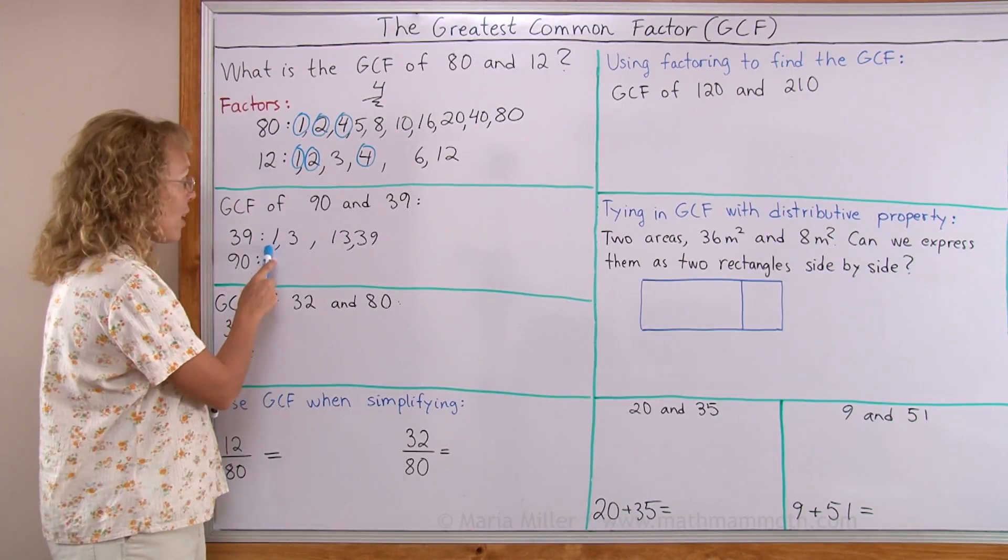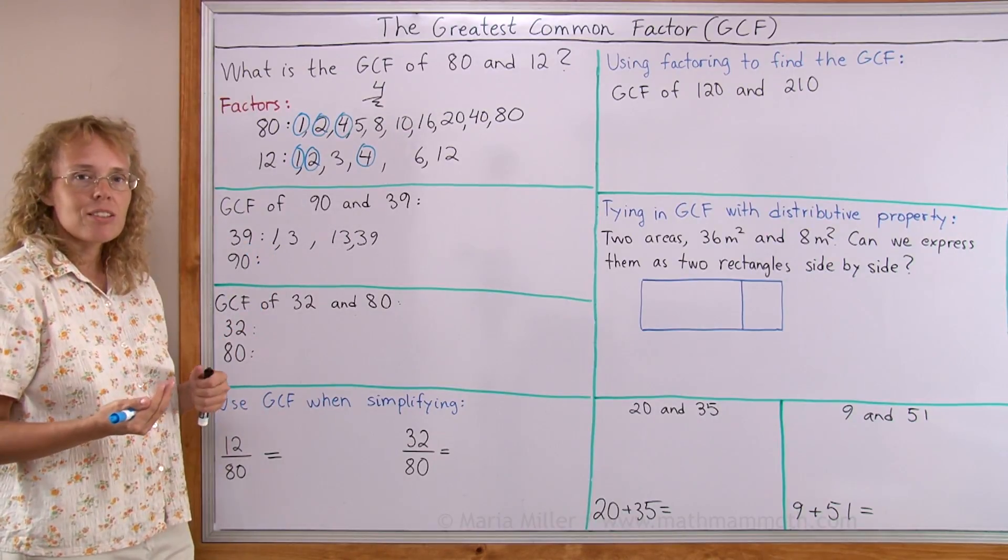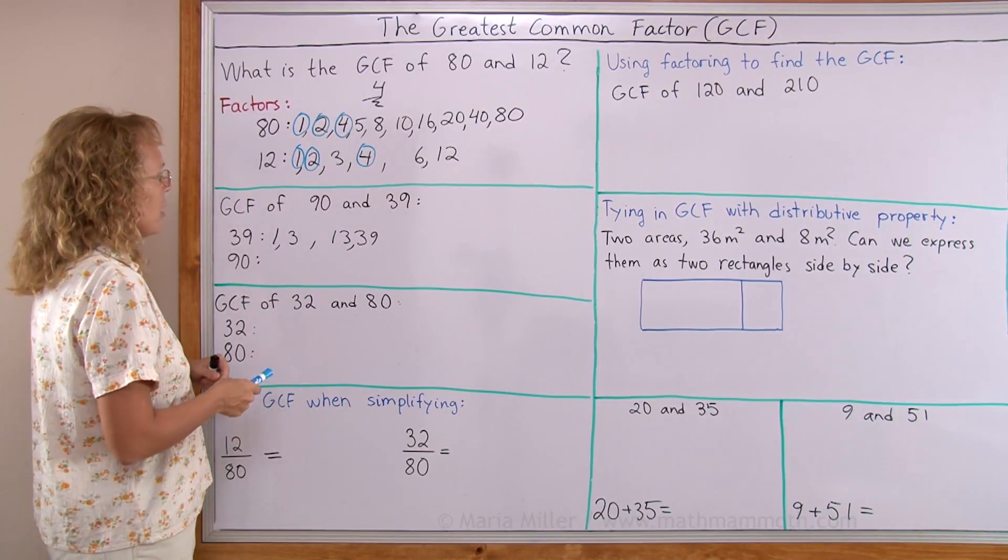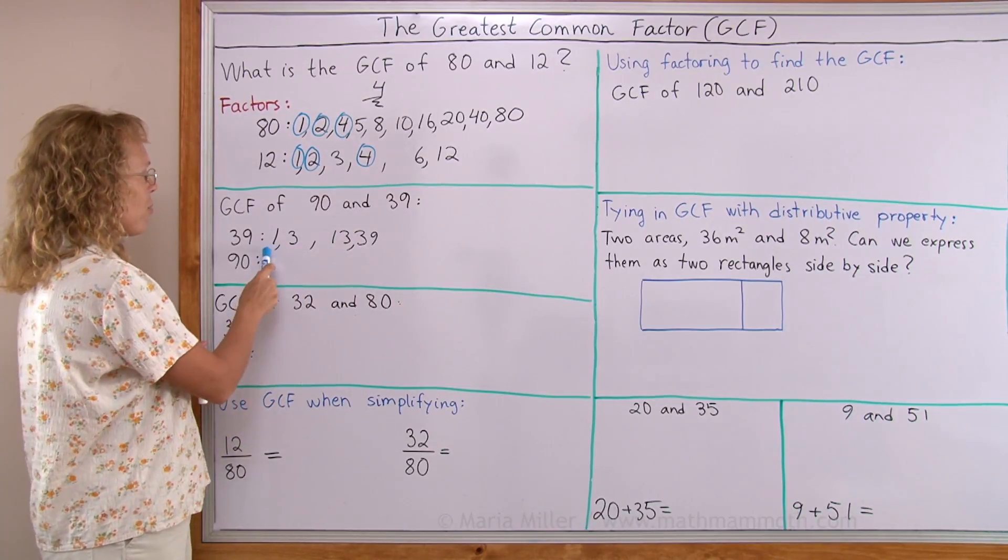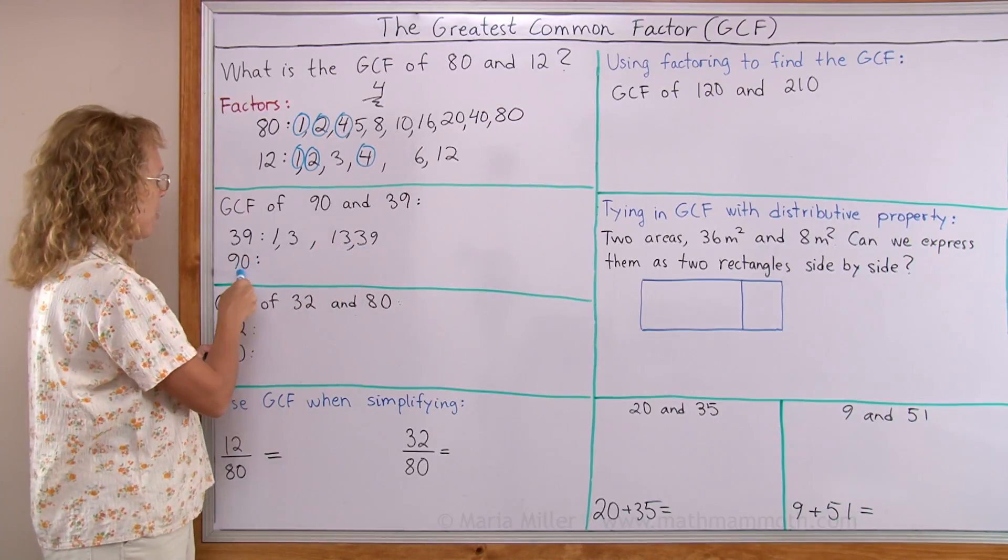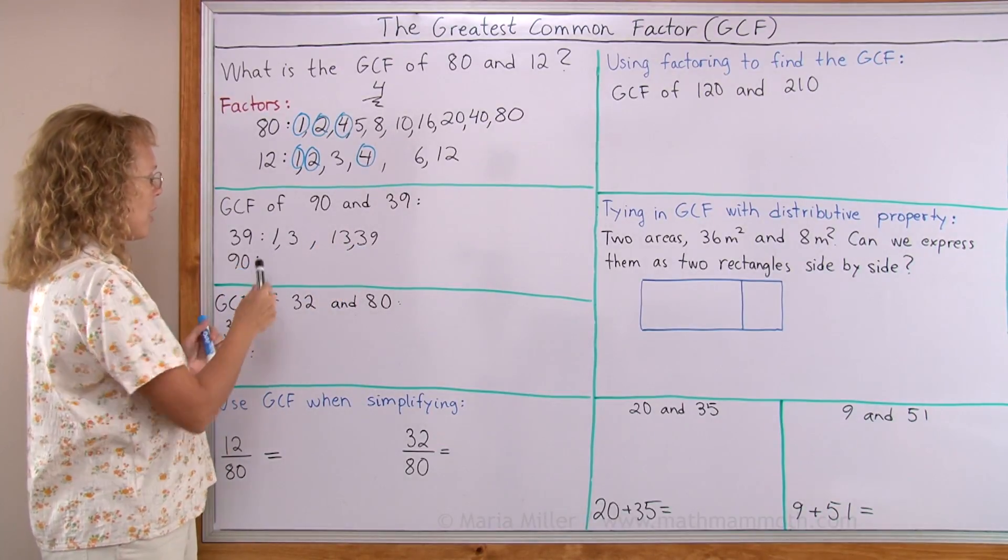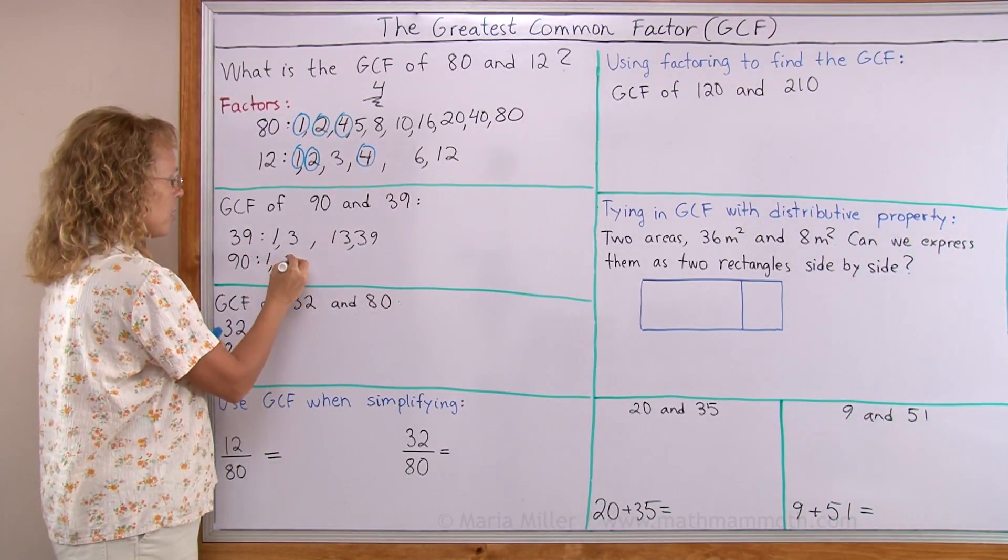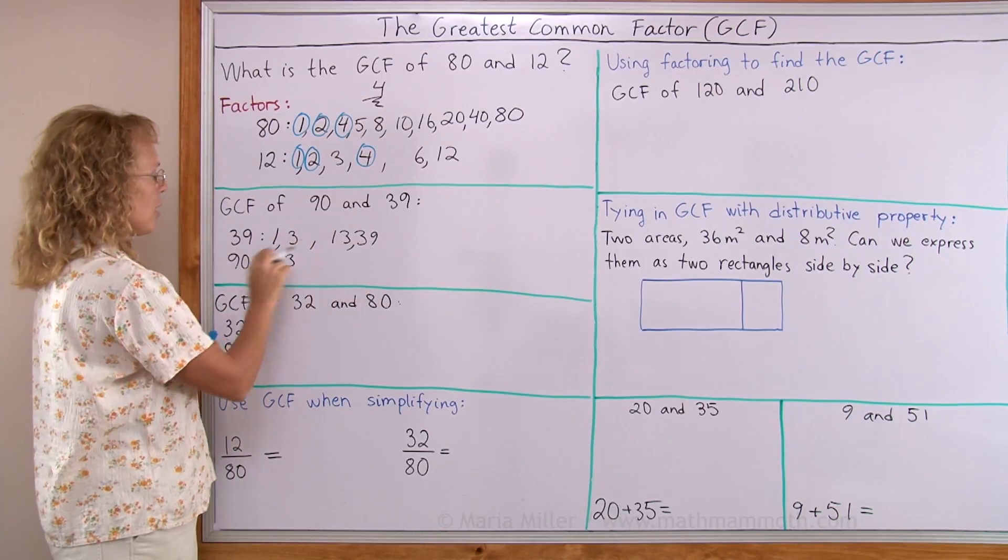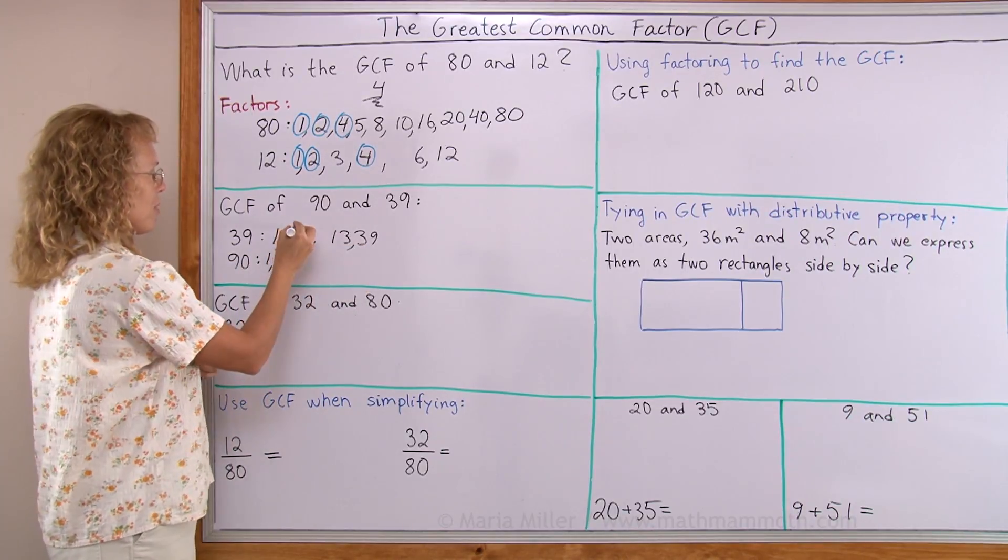If nothing else, 1 will be the greatest common factor of two numbers, right? So it's one of these. And so I'll just try if 1, or 3, or 13, or 39 is a factor of 90 or not. 1 is, of course, and 3 is too. 13 is not, 39 is not. So it must be 3.